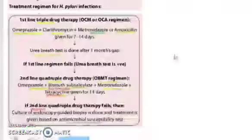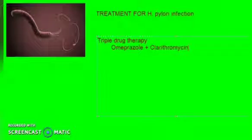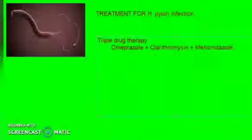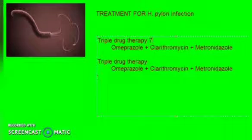Let us summarize what we have learned. We will give treatment for H. pylori infection, and it will basically be multi-drug. We don't want to give individual drugs because there is a lot of colonization. Let us start with triple drug therapy. Under triple drug therapy, you have omeprazole, which is a proton pump inhibitor, clarithromycin, then metronidazole or amoxicillin. This you will give for 7 to 14 days. After one month only, you will do the urea breath test.